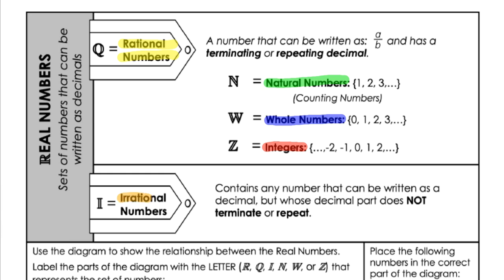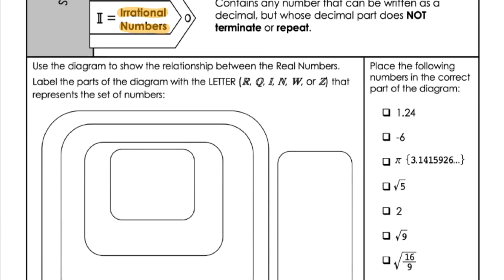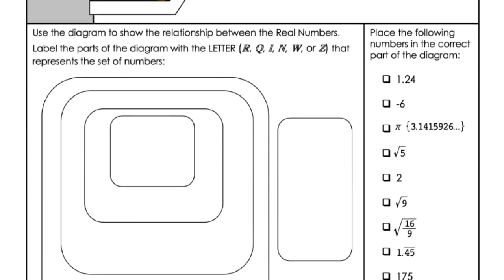Next, we have irrational numbers. These contain any number that can be written as a decimal, but whose decimal part does not repeat or terminate. Think about pi, for example — numbers that go on forever in their decimal form and never repeat. So those are the two types of numbers we're going to look at here.